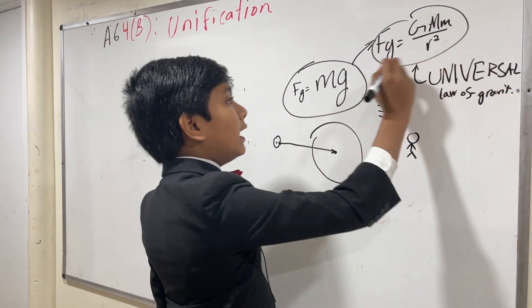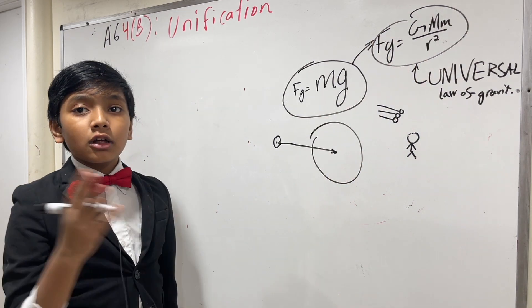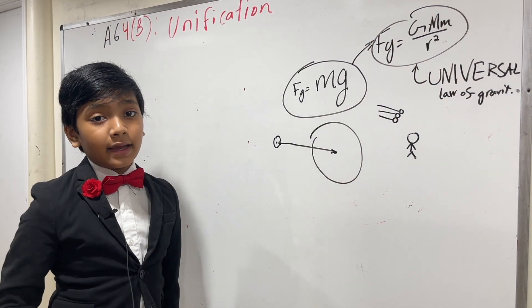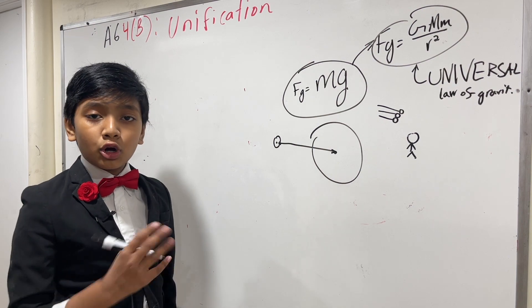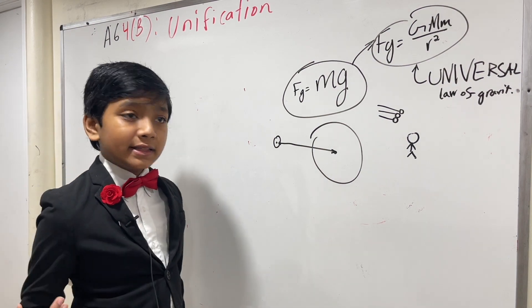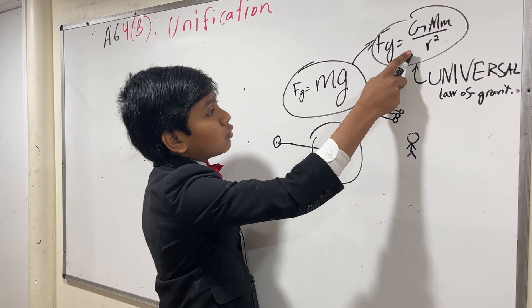With this law, he completely explained all of the orbits, like the orbit that the moon did around the Earth, how the Earth orbited the sun. With this one equation,